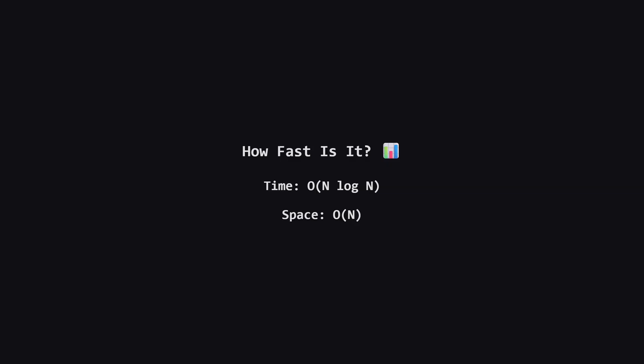So how efficient is this? The time complexity is dominated by the initial sorting of the unique spell damages. If there are n unique damage values, this takes O(n log n) time. The rest of the logic is a single pass, which is much faster. For space, we need to store the counts of each unique spell and our dp array. In the worst case, every spell has a unique damage value, so the space required is proportional to the input size, giving us O(n) space complexity.